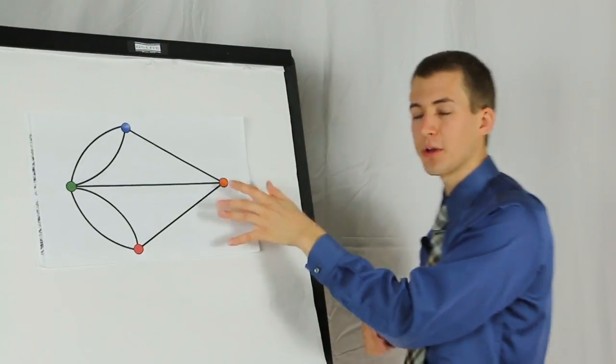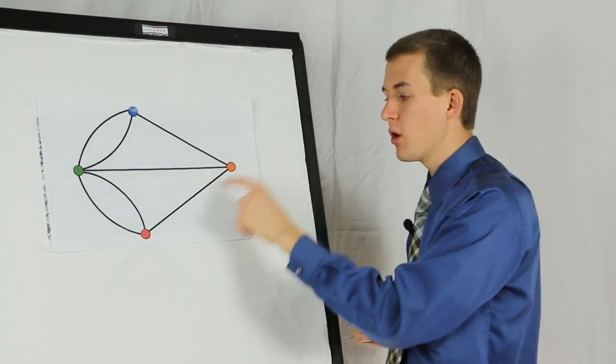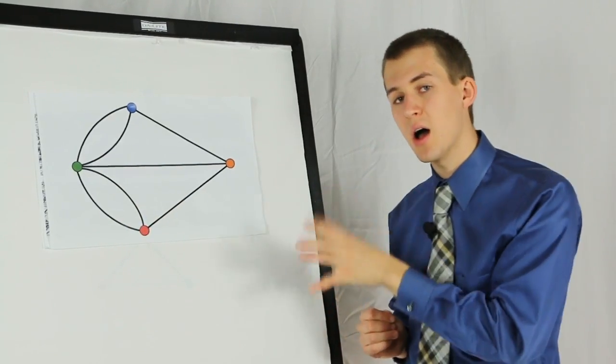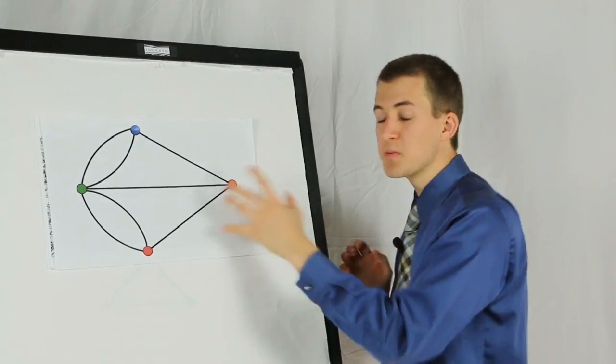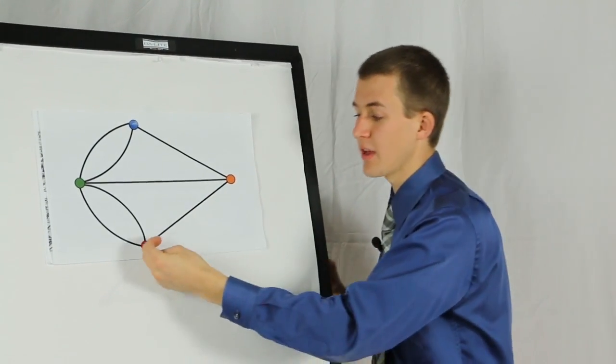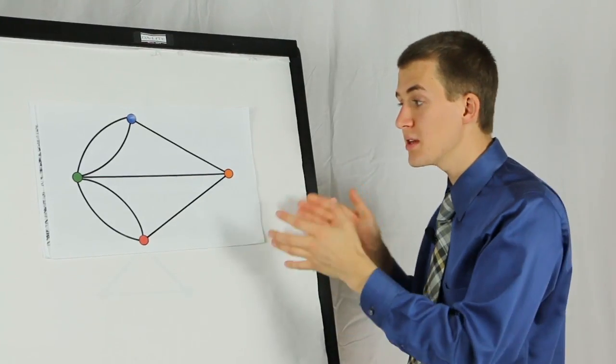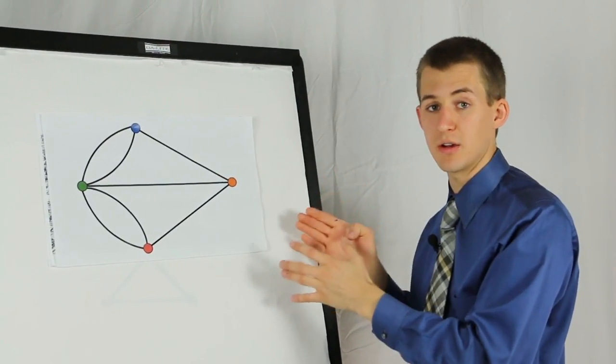Now going back to the Königsberg problem, notice how all of the nodes have an odd number of incoming edges. This means it's impossible to balance the number of incoming and outgoing paths. That means there is no Eulerian path here.